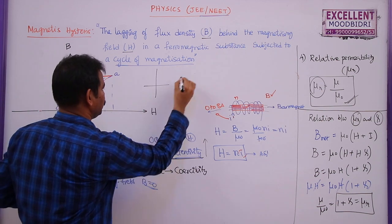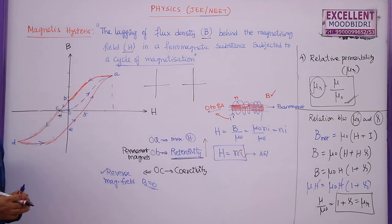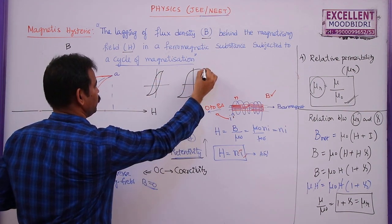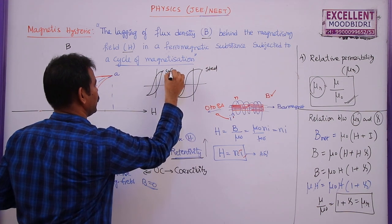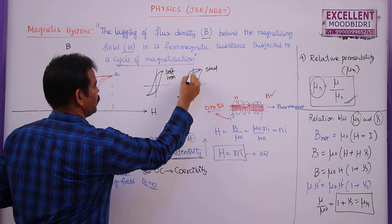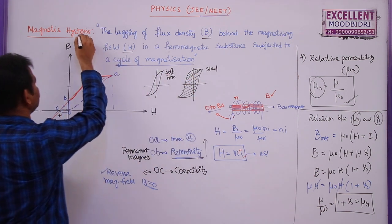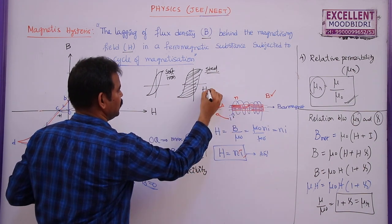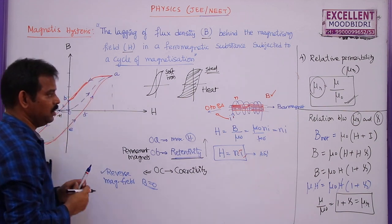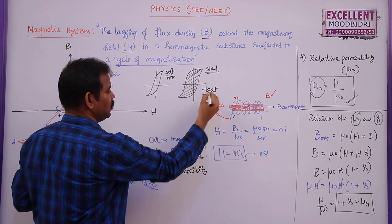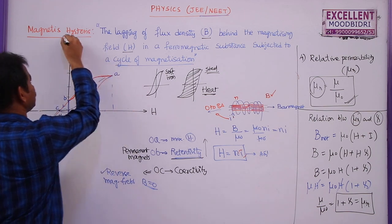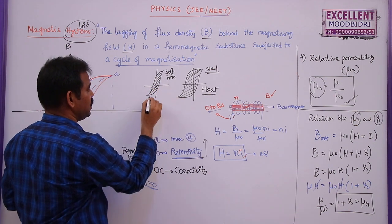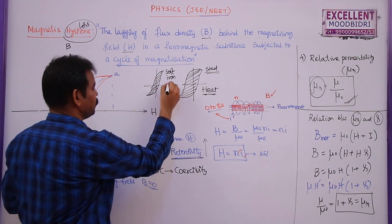Comparing soft iron and steel: for soft iron the hysteresis loop is very slim, whereas for steel the loop is wider. Whenever the area of the hysteresis curve is larger, hysteresis loss is greater — the material loses more energy as heat. So hysteresis loss is less for soft iron and more for steel.